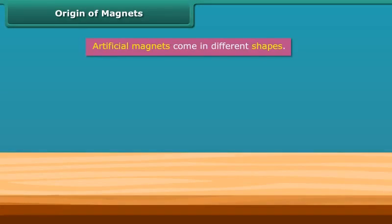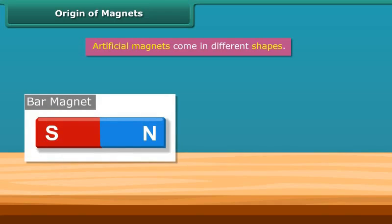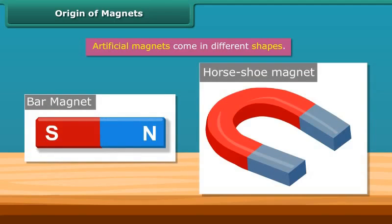Artificial magnets come in different shapes. For example, bar magnet, horseshoe magnet, etc.